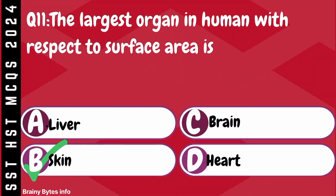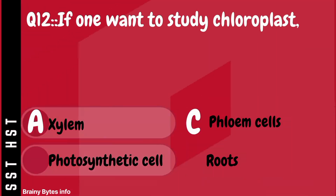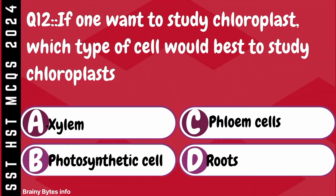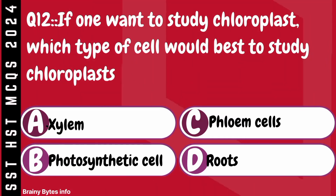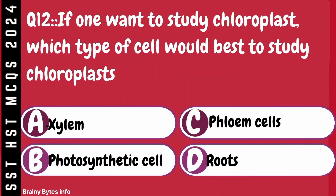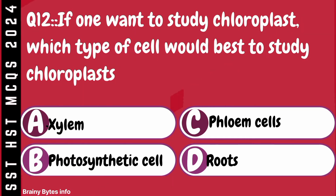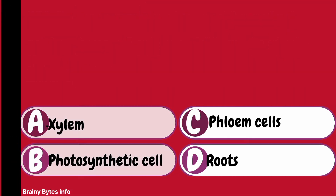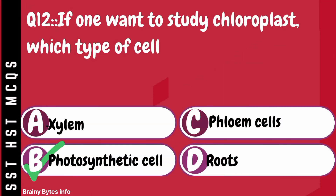Question 12. You want to study chloroplasts. Which type of cell would be best to study chloroplasts? A. Xylem. B. Photosynthetic cell. C. Phloem cells. D. Roots.